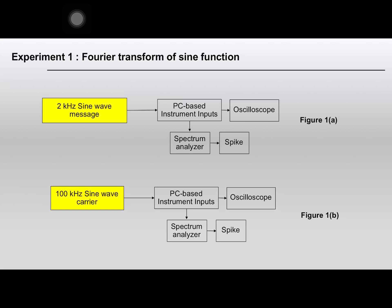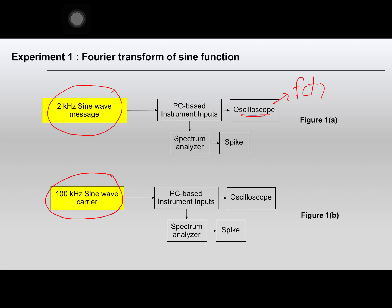So let's move on to the experiment part. In Experiment 1, construct the circuit according to the block diagram shown in Figure 1. The input of this experiment is a 2 kHz sine wave message and a 100 kHz sine wave carrier. Use the oscilloscope to display the signal in the time domain, and use the spectrum analyzer to display the signal in the frequency domain.